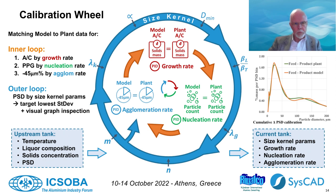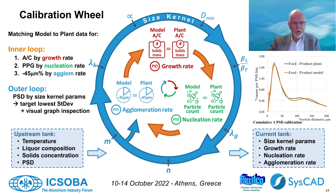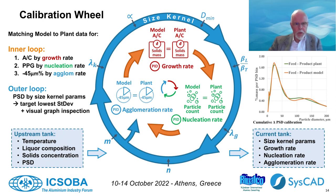Calibration can either be performed on individual precipitators and seedings or, in certain cases, on a group of precipitators. Start calibration with a base case, using normal operating conditions or perhaps average conditions over a particular stable period of time. There are four items to be calibrated: the size kernel parameters, the growth rate, the nucleation rate, and the agglomeration rate. These four items need to be calibrated simultaneously because each one of them affects the others.